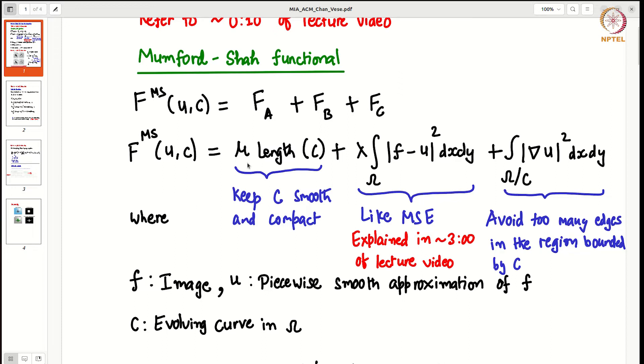FC, the third term, it penalizes for the presence of gradients within the region bound by the C. So basically its main objective is to avoid too many edges in the region bounded by the curves.